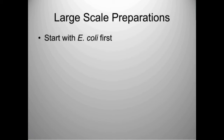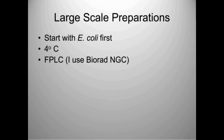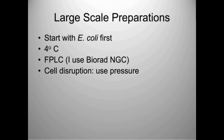For large-scale preparations, we usually start with E. coli—it's cheap and usually works. We do all preps at 4°C to prevent proteases from working and to keep the protein stable. I strongly recommend using an FPLC system such as the BioRad NGC: you can run gradients, monitor your protein in real time, and maintain excellent records. For cell disruption, we always use pressure—French press or modern cell disruptors—rather than sonication, because sonication has caused protein precipitation in several of our cases.